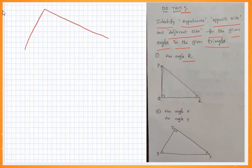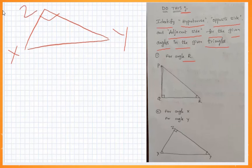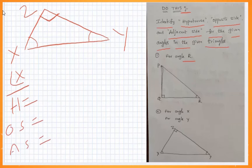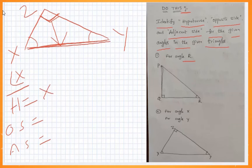We have triangle XYZ. I will identify the sides for the given angles. The right angle is marked. For angle X, we can identify the hypotenuse, opposite side, and adjacent side. The right angle is at Z, so the hypotenuse is the side opposite the right angle — that is XY. XY is the hypotenuse.